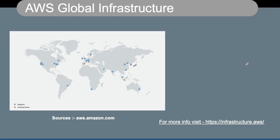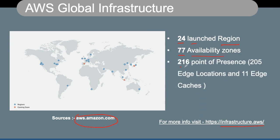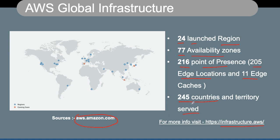Now let's look at the AWS global infrastructure. This picture is taken from aws.amazon.com, and you can also visit infrastructure.aws for more details. It has 24 different regions, 77 availability zones, 216 points of presence including 205 edge locations and 11 edge caches, covering 244 countries and territories. These numbers keep changing, so you are not tested on them in AWS certification exams.